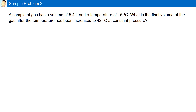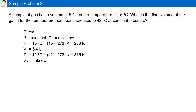Sample problem two. A sample of gas has a volume of 5.4 liters and a temperature of 15 degrees Celsius. What is the final volume of the gas after the temperature has been increased to 42 degrees Celsius at constant pressure? Here, we are given P is constant. Therefore, we'll be using Charles' law. The initial temperature is 15 degrees Celsius, but we need to convert it to Kelvin — that gives us 288 Kelvin. The initial volume is 5.4 liters. The final temperature is 42 degrees Celsius, converted into Kelvin as 315 Kelvin.